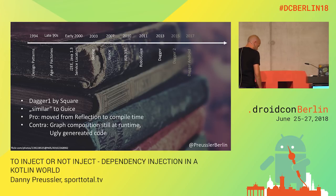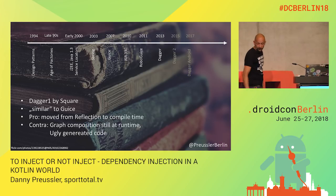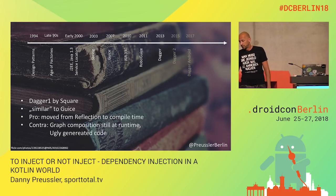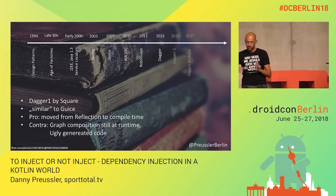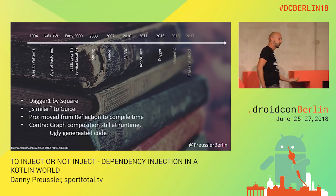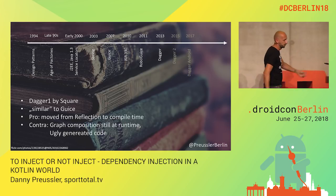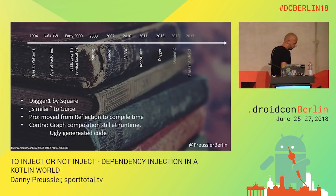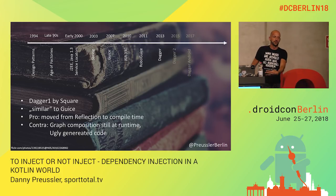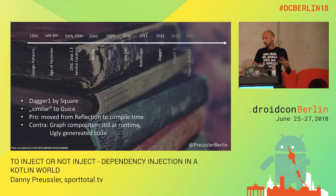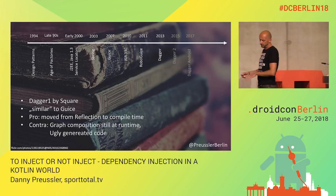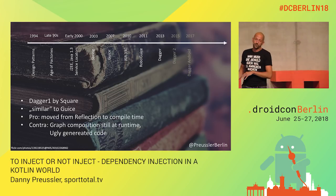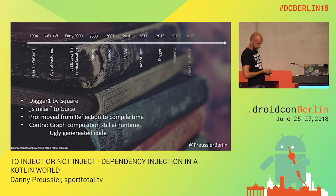Happily, we got Dagger, initially from Square. They did things similarly to Guice but moved away from the reflection approach. So there was an annotation processor, and things were basically generated — code generation came in via annotation. It's not complete, and the generated code is very ugly if you ever had to debug it, but we had something we could actually use on Android.